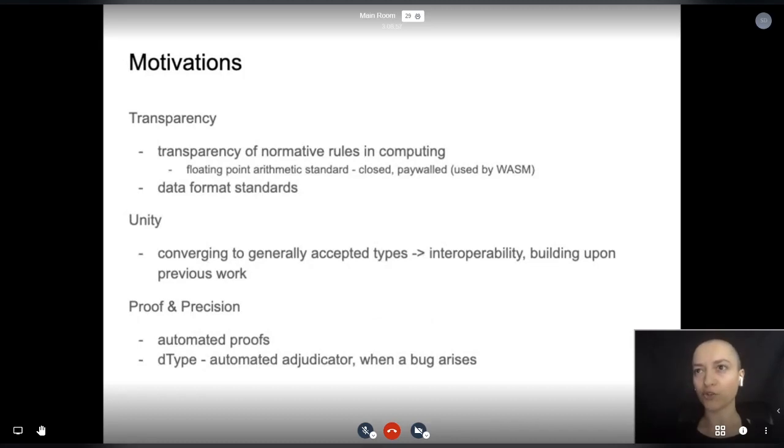Our motivations: normative rules in computing must be open to everyone. An unfortunate counter example is the floating point arithmetic standard, which is paywalled and costs $100 to access. Web assembly, which is supposed to be an open standard and is built to become the future binary language for software building blocks, uses it.